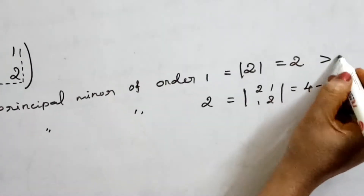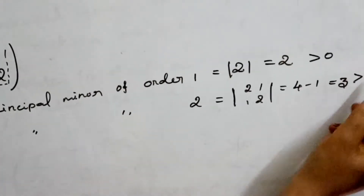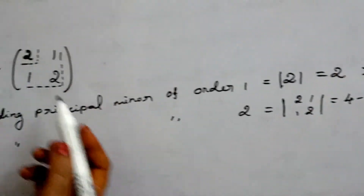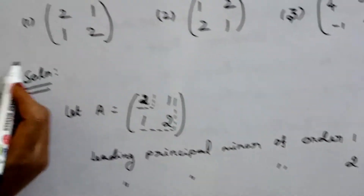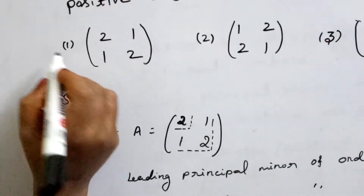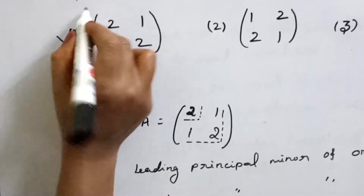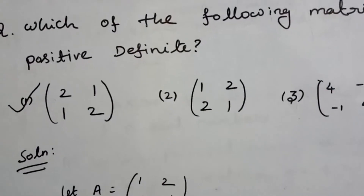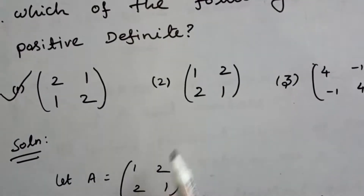Both values are greater than 0. Therefore, the first matrix is a positive definite matrix.